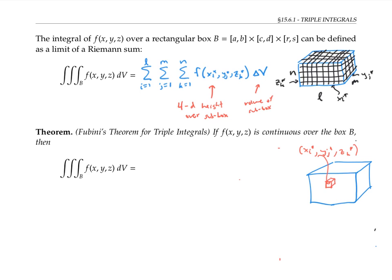Now what I've written here is not quite right. The integral is not equal to this Riemann sum, but it is equal by definition to the limit of this Riemann sum as the number of sub boxes goes to infinity. In other words, as l, m and n go to infinity. So this is the Riemann sum definition of a triple integral.